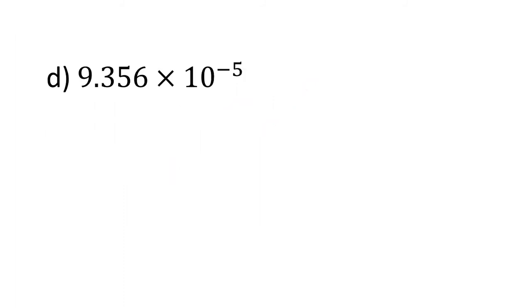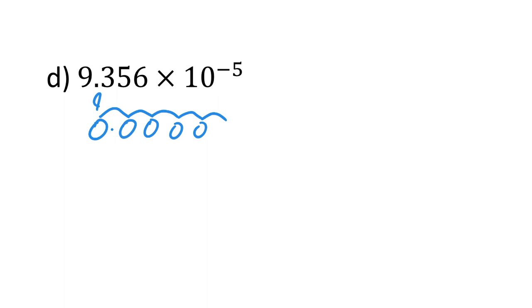For part D, we have to move the 9 back 5 places. So I'm going to put 0 point, 0, and place my 9 here — that has to move back once, twice, 3 times, 4 times, 5 times — then add in your 3, 5, and 6, giving the final decimal answer.